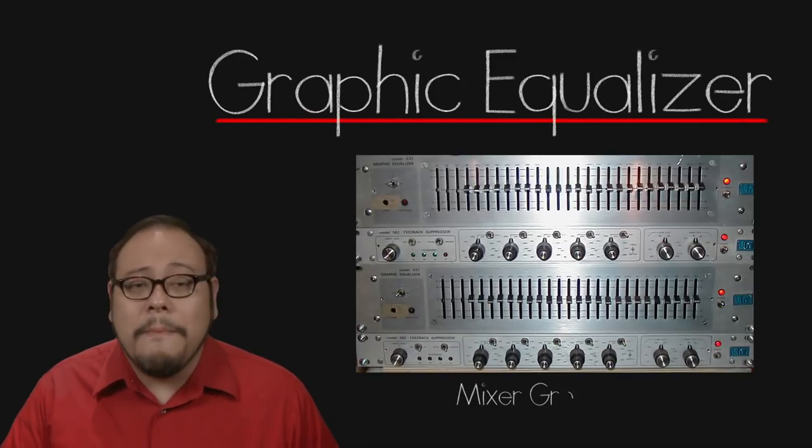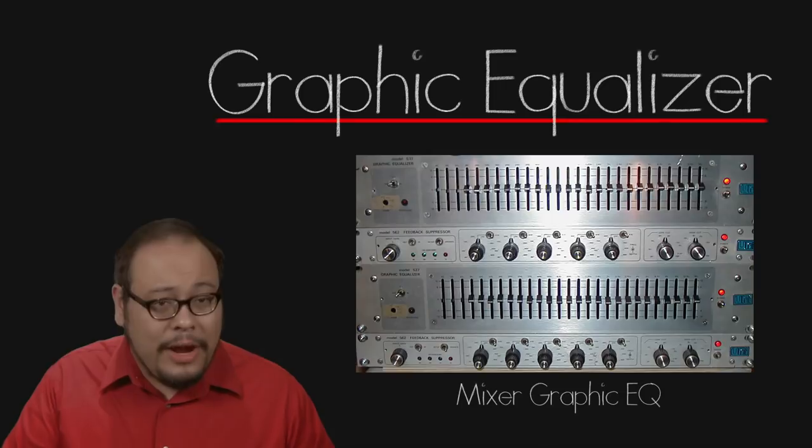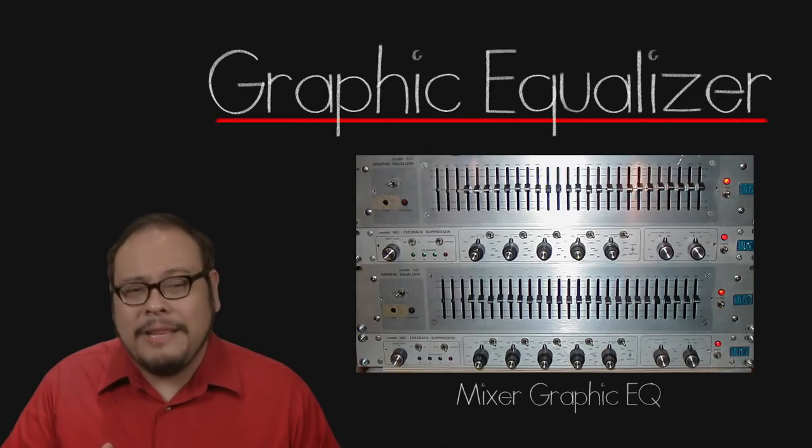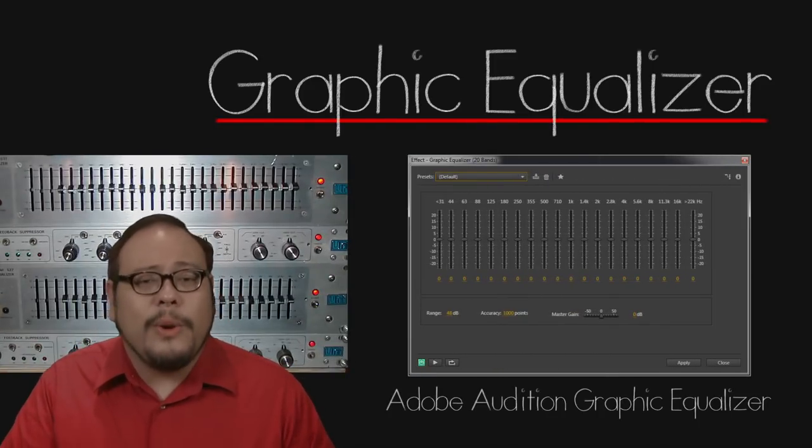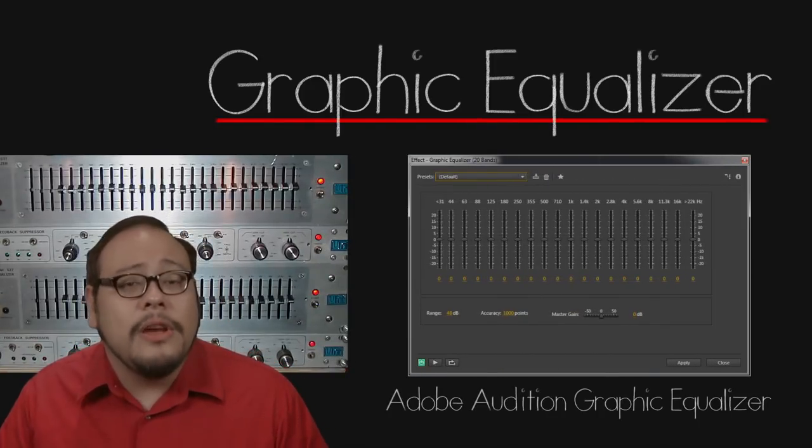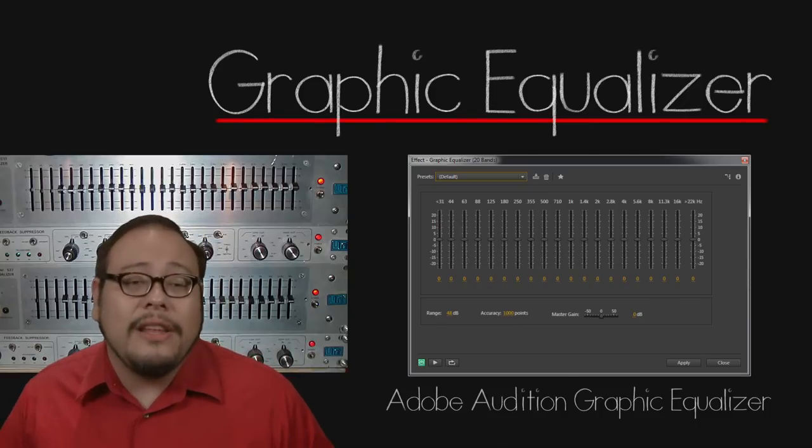These are commonly found on mixed boards. They behave the same way as parametric equalizers except in selecting specific frequencies and changing the Q values all the frequencies are present as sliders with predetermined intervals and Q values.